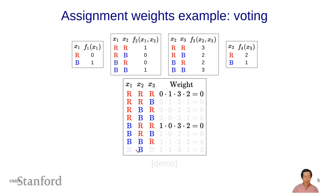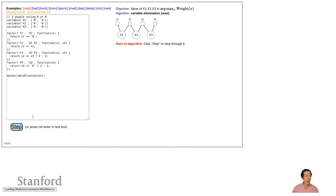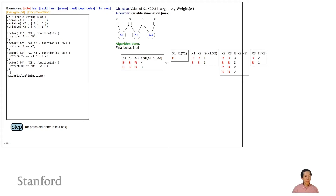You can go through all eight possible assignments of values to the variables, and each has a particular weight. In the demo, clicking step runs the inference algorithm and produces a weight for every assignment with non-zero weight. There are two possible assignments with non-zero weight: BBR and BBB.